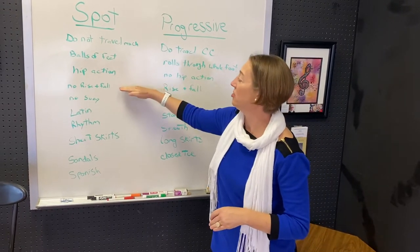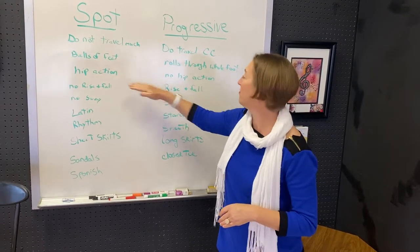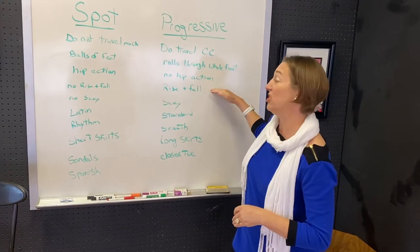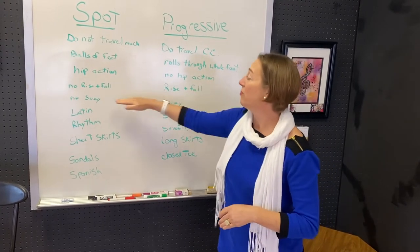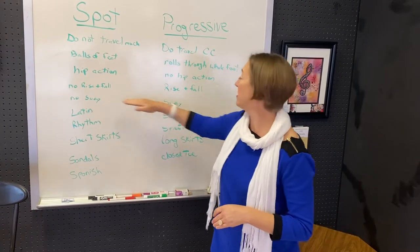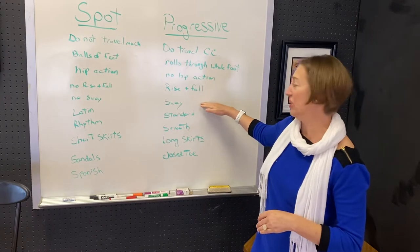Spot dances usually do not have rise and fall, while progressive dances usually do. Spot dances usually don't have sway, and progressive dances usually do.